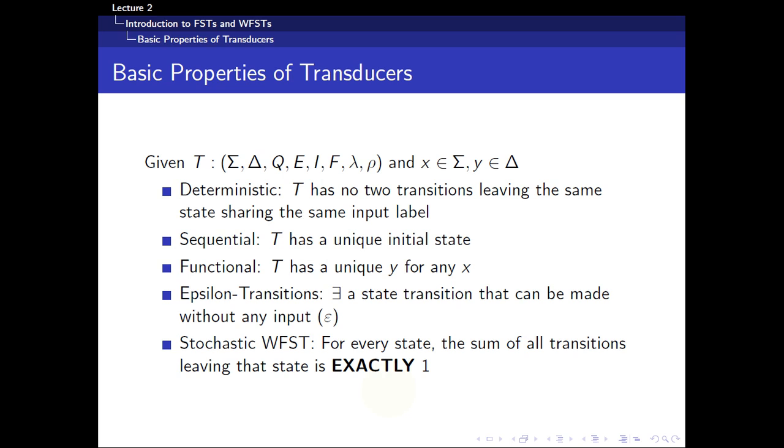And finally, these are some of the special names that we give to special transducers. For example, the first one would be deterministic transducer. So we call a transducer T that is deterministic if there are no two transitions leaving the same state sharing the same input label. It just means that for all the arrows coming out from the circles, there is no same input.